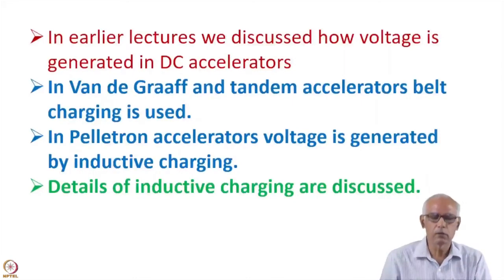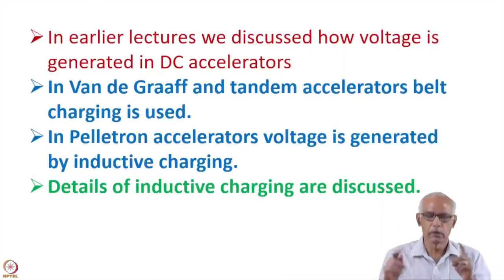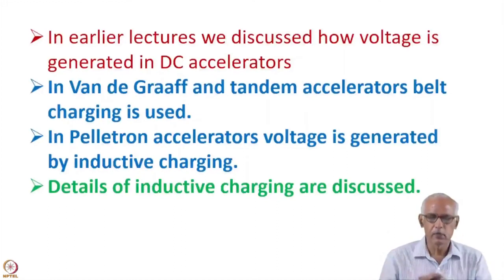In the case of Cockcroft-Walton, the voltage is generated by charging and discharging of capacitors. In the case of Van de Graaff and initially in Tandem Accelerators, the voltage was generated by charging the capacitor formed by the high voltage terminal and the high pressure vessel. In the case of Pelotron, the voltage is generated by a much better charging system called the inductive charging system.